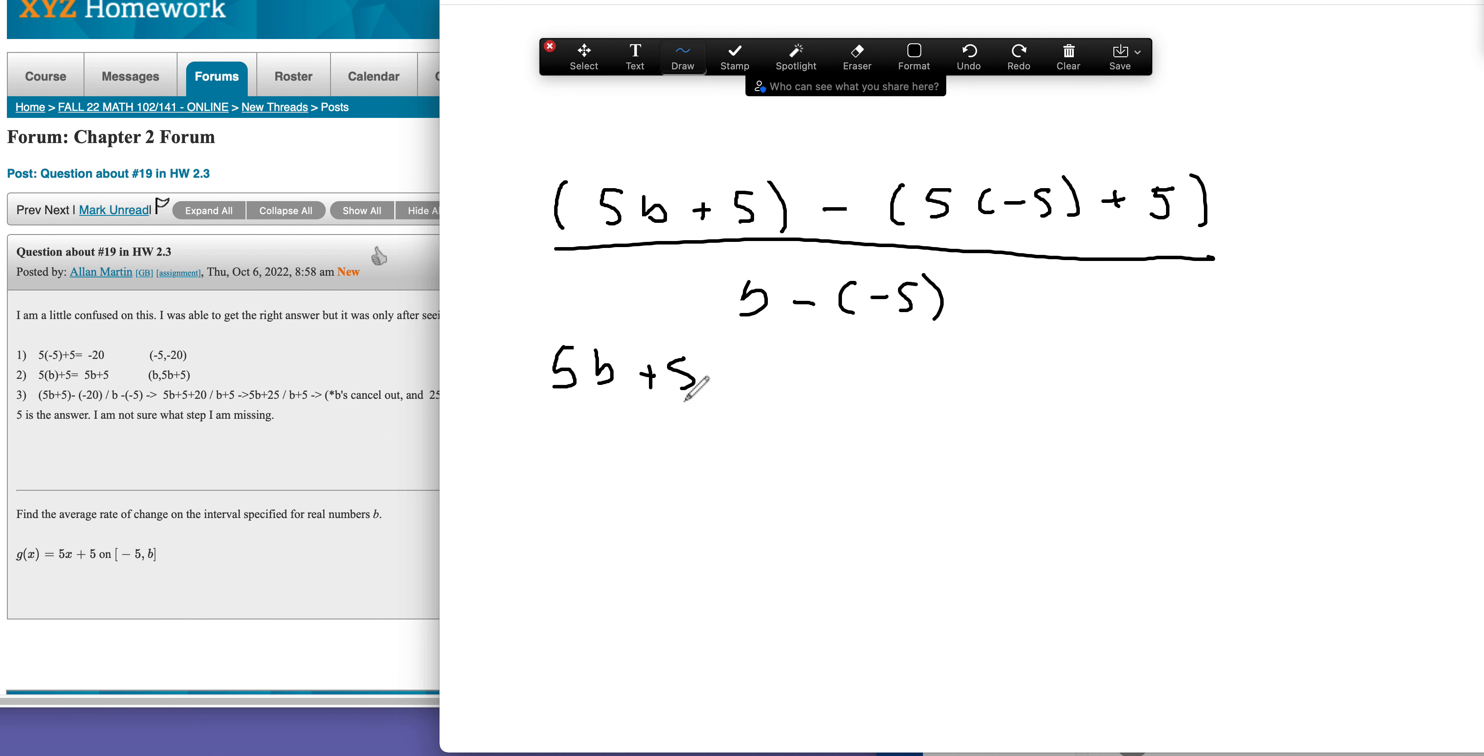So we've got 5b plus 5, and then just like you said, this would be minus, this is negative 25 plus 5, so that's negative 20.